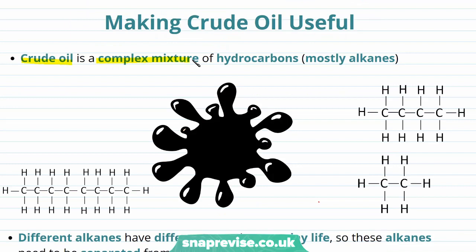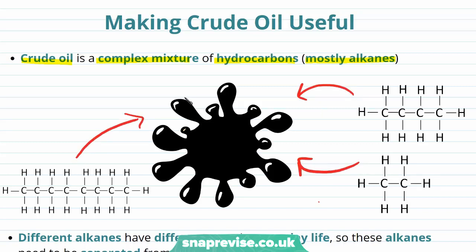Crude oil is a mixture of lots of different organic molecules, specifically hydrocarbons, which are molecules made out of just carbon and hydrogen. Out of the possible hydrocarbons, the ones most likely to be found in crude oil are alkanes. Alkanes are hydrocarbons that only contain single bonds between carbon atoms. A few different alkanes are drawn on this slide, and all of these will be present within crude oil.